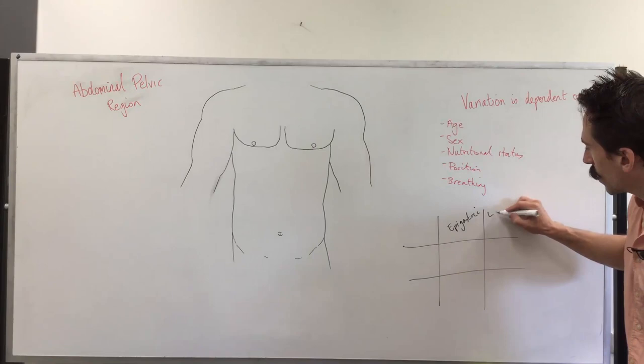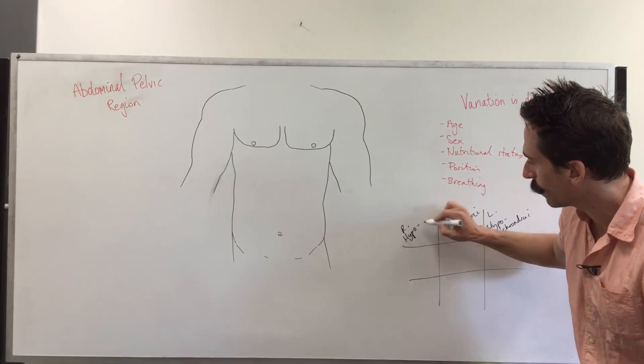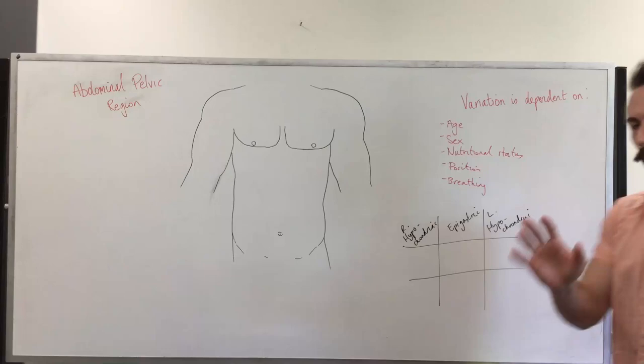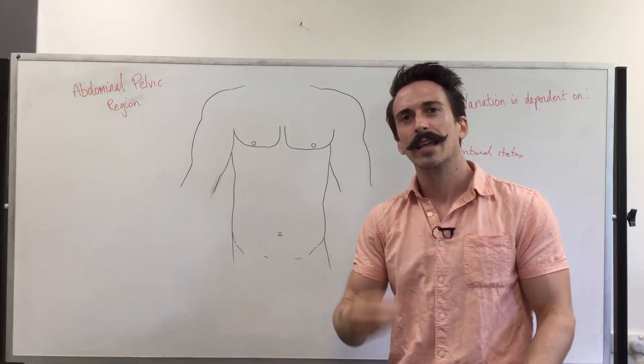Then flanking either side are the hypochondriac. We've got the left hypochondriac and the right hypochondriac. Remember, it's always patient left and patient right. Now you've probably heard the term hypochondriac before, maybe you've been called a hypochondriac because you think you're sick all the time. Why would these regions be called the hypochondriac? Because you're soon going to find that they sit underneath the ribs,